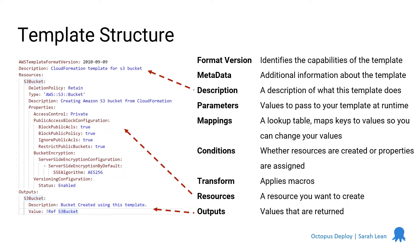The next three sections are actually really advanced options: mappings, conditions, and transforms. A mapping is really a lookup table so you can change values throughout your template. Conditions are things like — if this is happening somewhere else in the template, do this. That can be quite useful, especially if you're starting to deploy templates across multiple regions and looking at more complex scenarios.